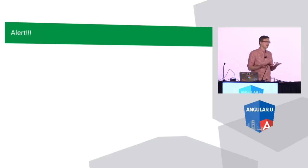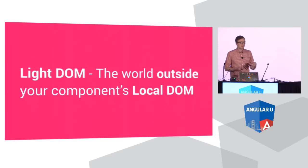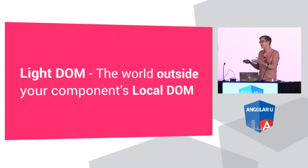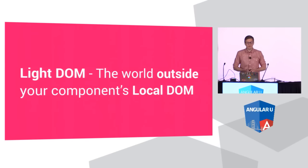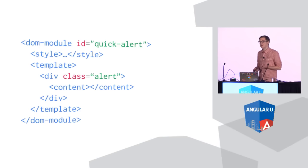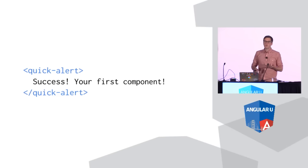The problem is that the text itself is hard-coded, so no one's actually going to want to use this in their application. What I'd like to do is replace that hard-coded text with some content invited in from the light DOM — the world outside of your component. I just replace the alert text with the content element, and now anything that someone passes into my quick-alert element, any message they pass in, or even markup, will render as if it were inside of my local DOM.